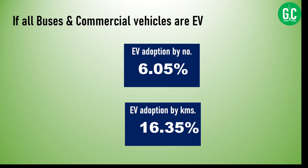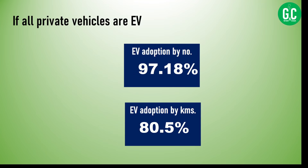If all private vehicles — two-wheelers and passenger cars — were converted to EV, the EV adoption rate by number would be about 97%, and by kilometers it would be 80.5%. This underlines the fact that along with commercial vehicles, it is private vehicles that most need to be converted to EVs — and that is the key insight this episode aims to highlight.